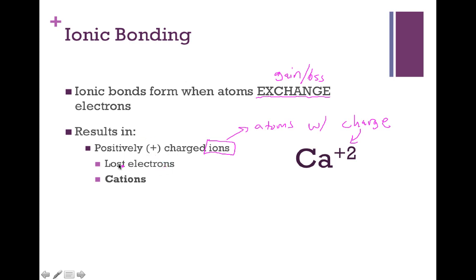The atoms that lose their electrons are going to adopt a positive charge. If you recall, an electron itself has a negative charge, therefore losing them leaves you with a net positive. We refer to these types of ions as cations.